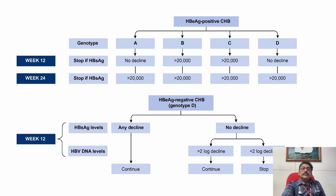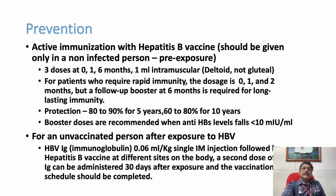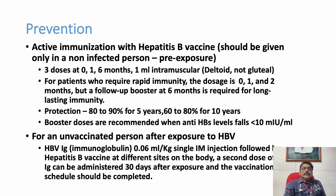Different genotypes respond differently to treatment. Prevention is very important. Pre-exposure vaccination consists of three doses — 0, 1, 6 months — 1 ml intramuscular into the deltoid. For patients requiring rapid immunity following exposure, doses can be given at 0, 1, 2 months followed by a booster at 6 months for long-term immunity. Protection is 80 to 90 percent for 5 years and 60 to 80 percent for 10 years. Booster doses are recommended when anti-HBS levels fall below 10 IU/ml.